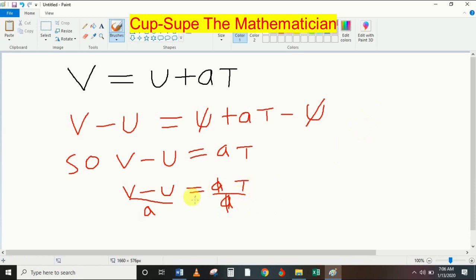V minus U divided by A equals T. So now I can rewrite this. T equals V minus U over A. So now T is the subject of the formula. T is right here.